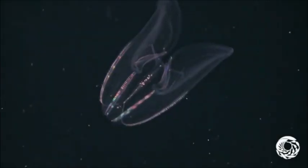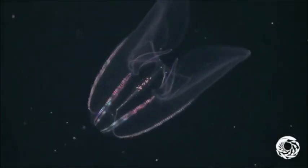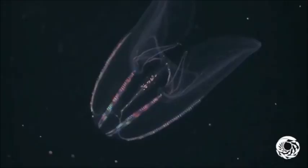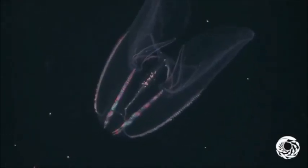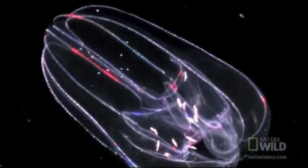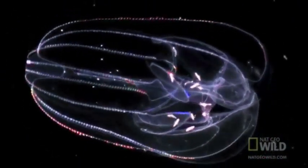Their radially symmetric body contains eight rows of comb-like plates of fused cilia that beat in order for them to move through the water.